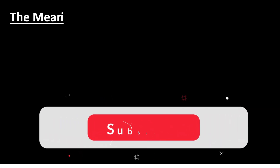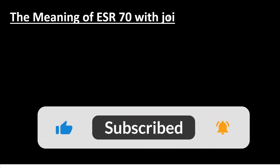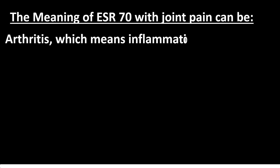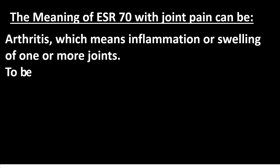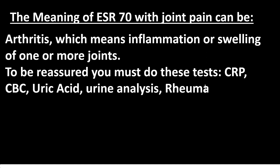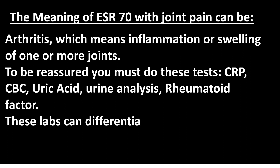The meaning of ESR 70 with joint pain can be arthritis, which means inflammation or swelling of one or more joints. To be reassured, you must do these tests: CRP, CBC, uric acid, urine analysis, and rheumatoid factor. These labs can differentiate some of the suspected diseases responsible for joint pain and increased ESR test results.